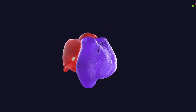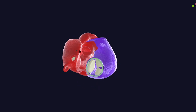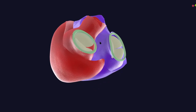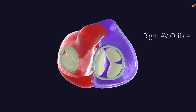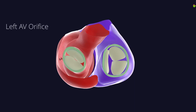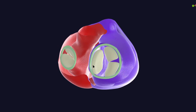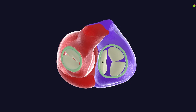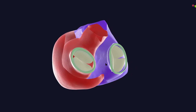Now if we remove the right atrium as well as the left atrium, you can see the right atrioventricular (AV) orifice and the left atrioventricular orifice, and from these AV orifices the valve cusps or flaps are protruding. The right side has a tricuspid valve — meaning three cusps — while the left heart has a valve with two cusps.